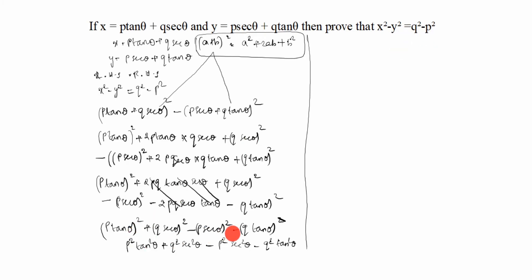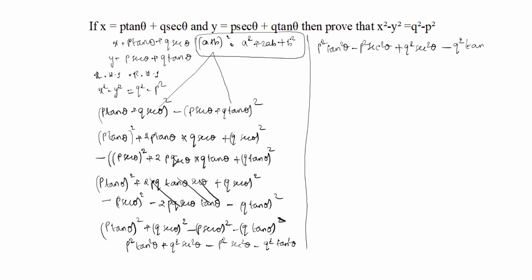We need p and q terms separated. So we regroup: p²·tan²θ minus p²·sec²θ, and q²·sec²θ minus q²·tan²θ.